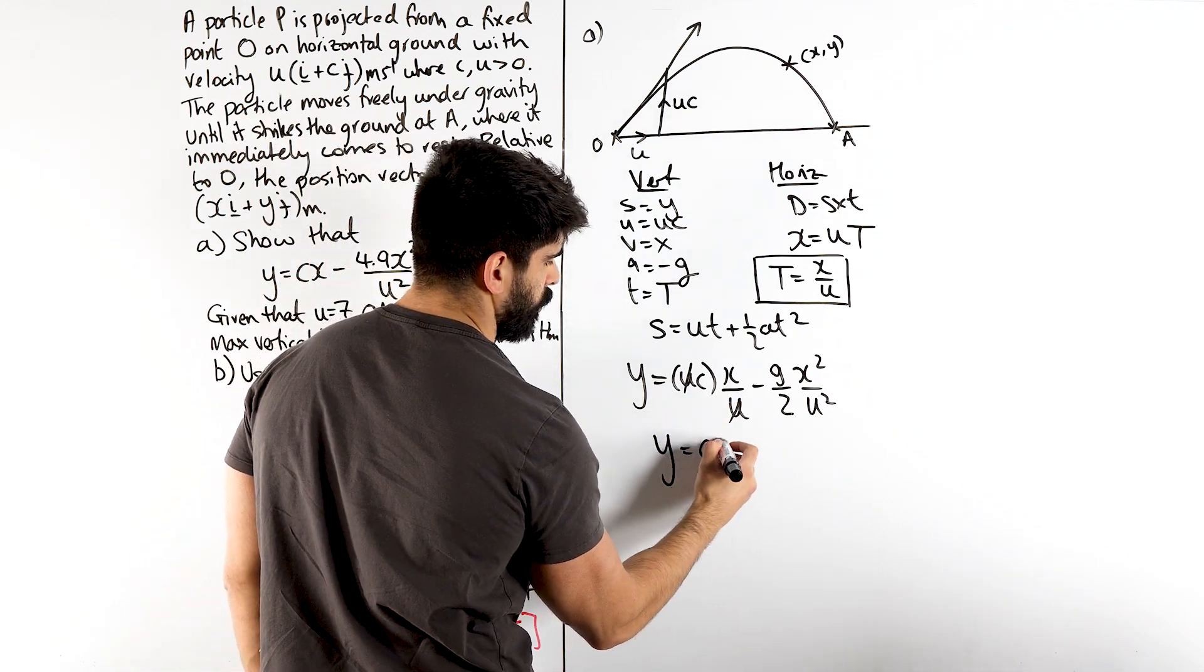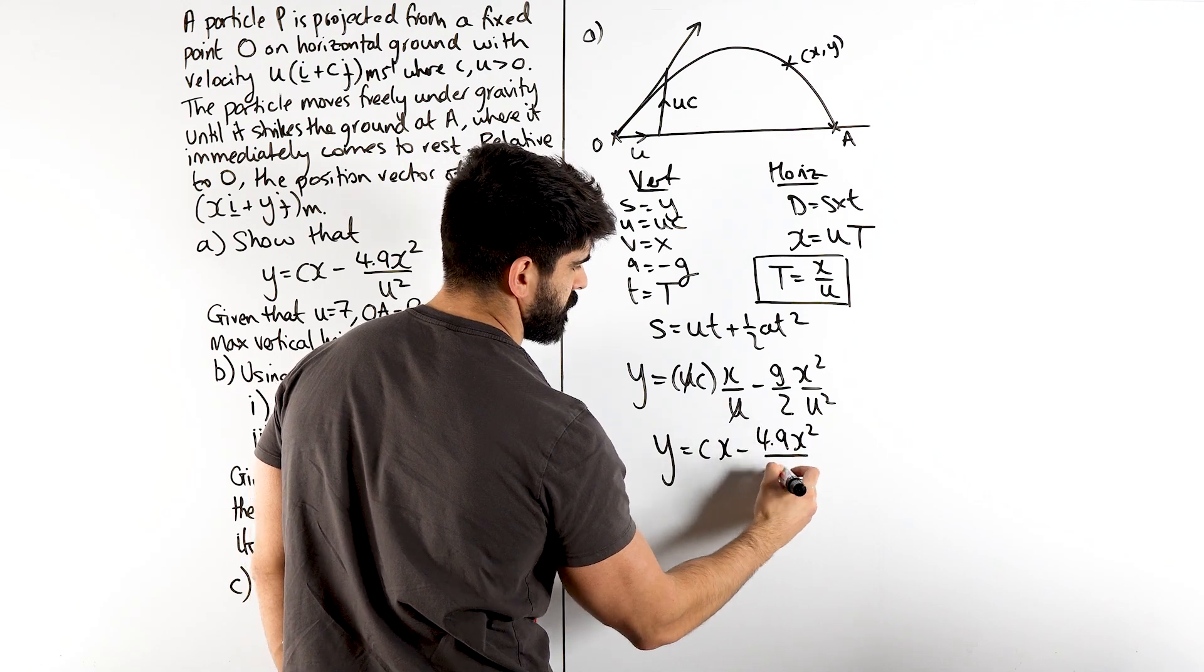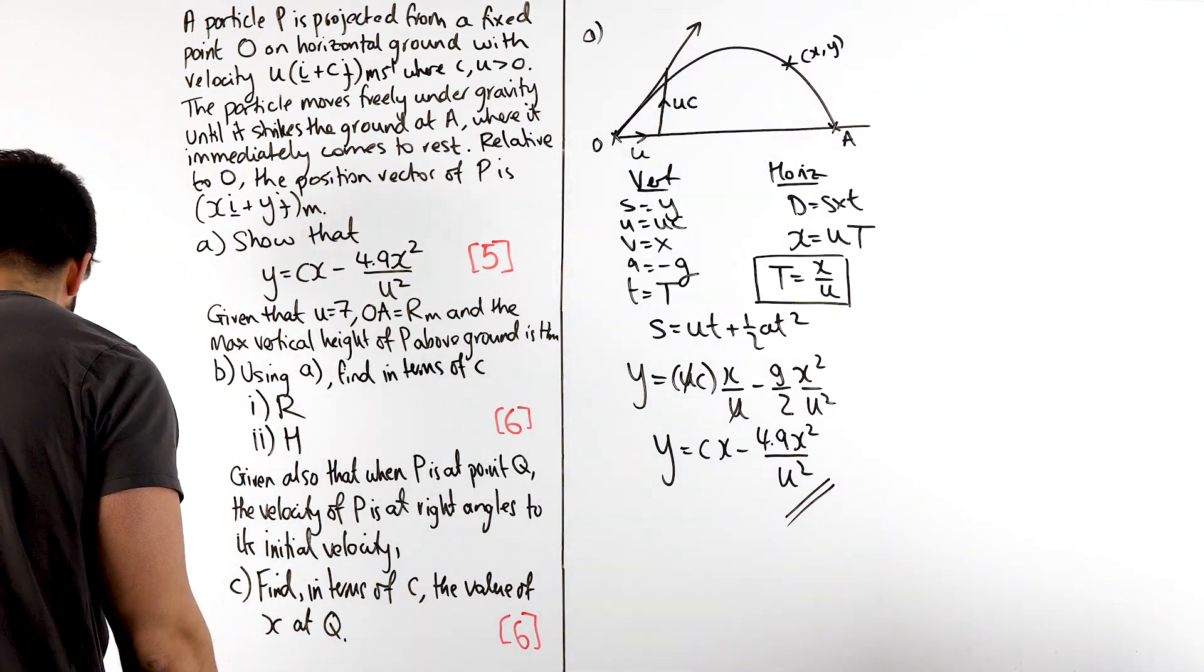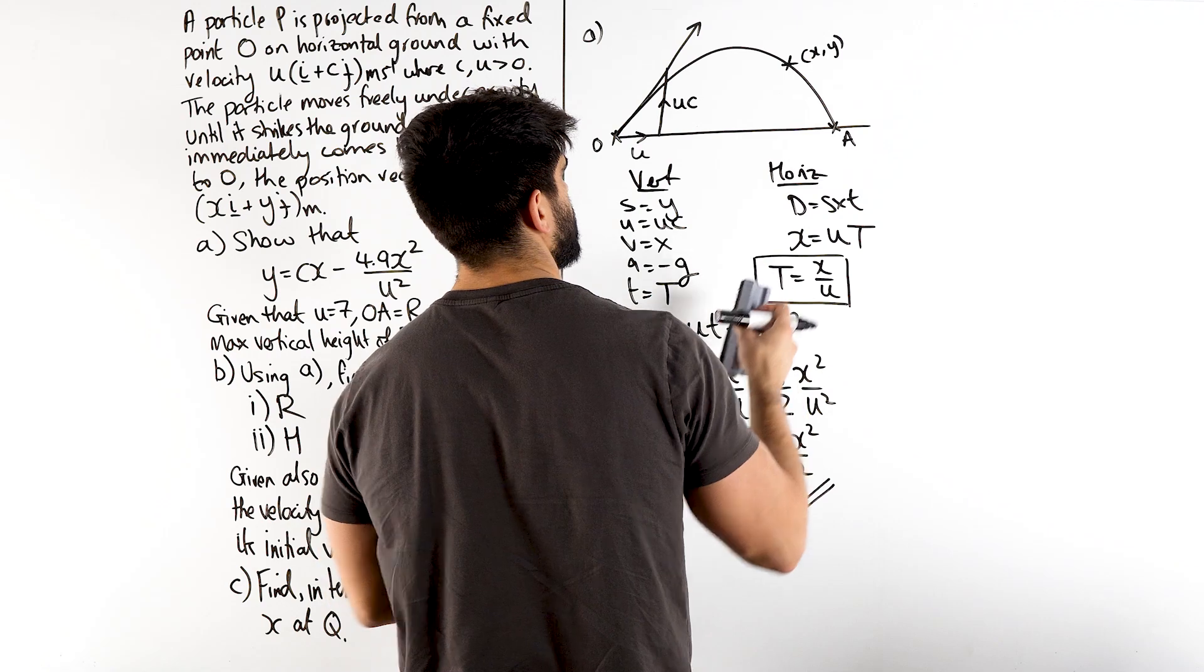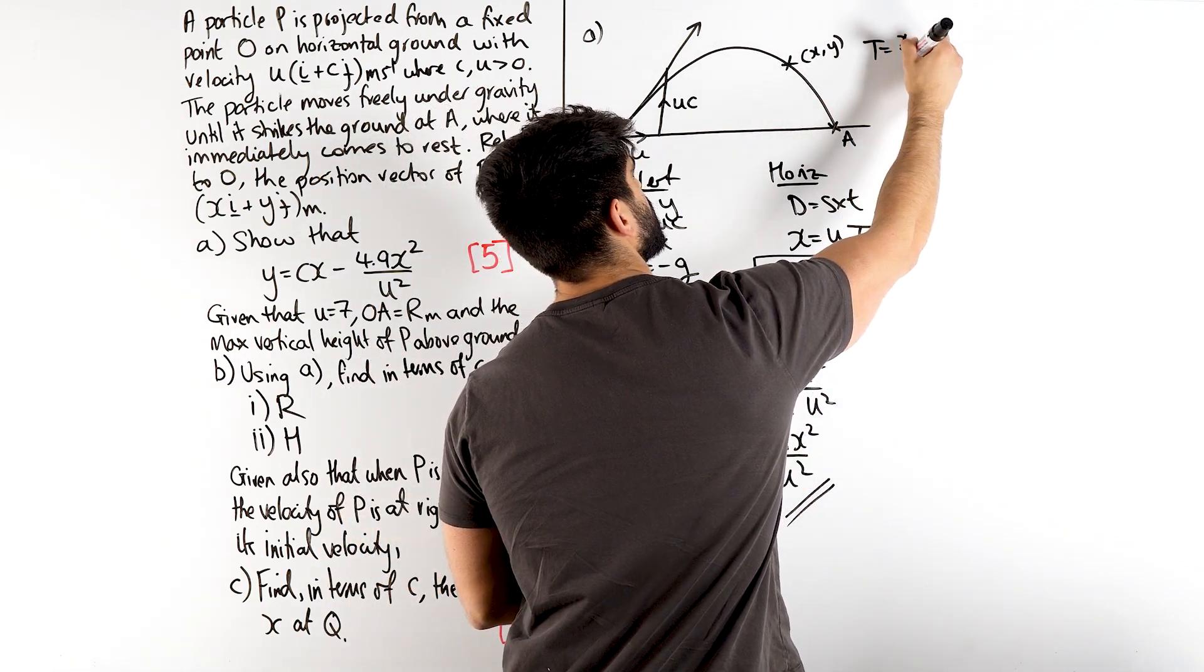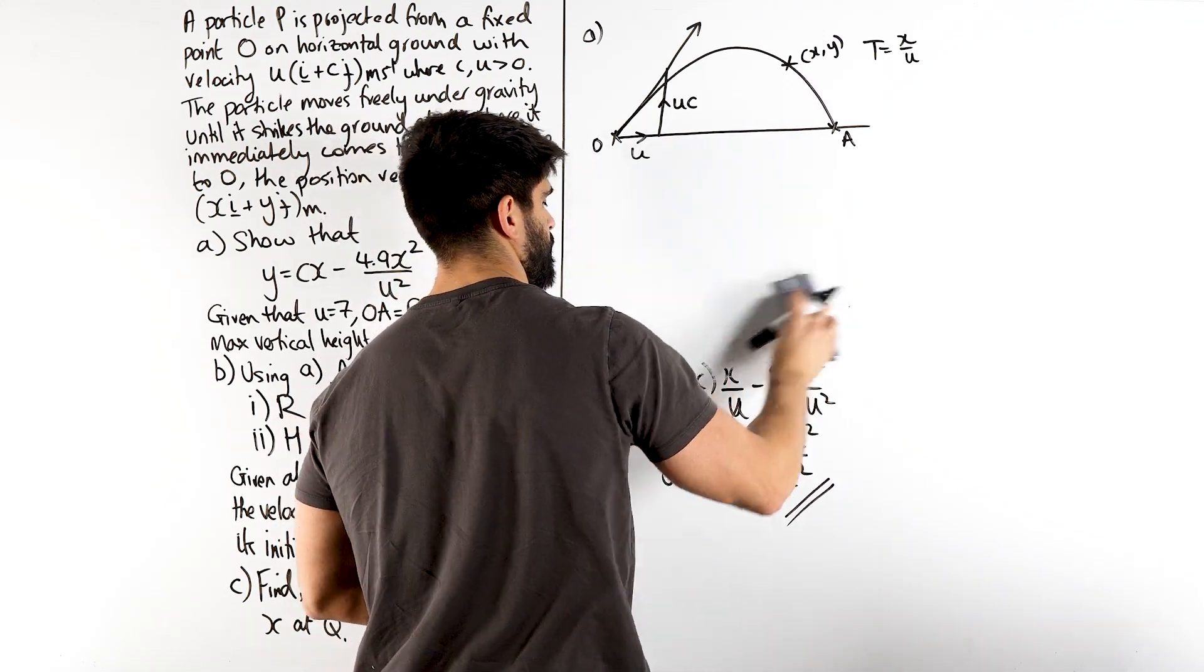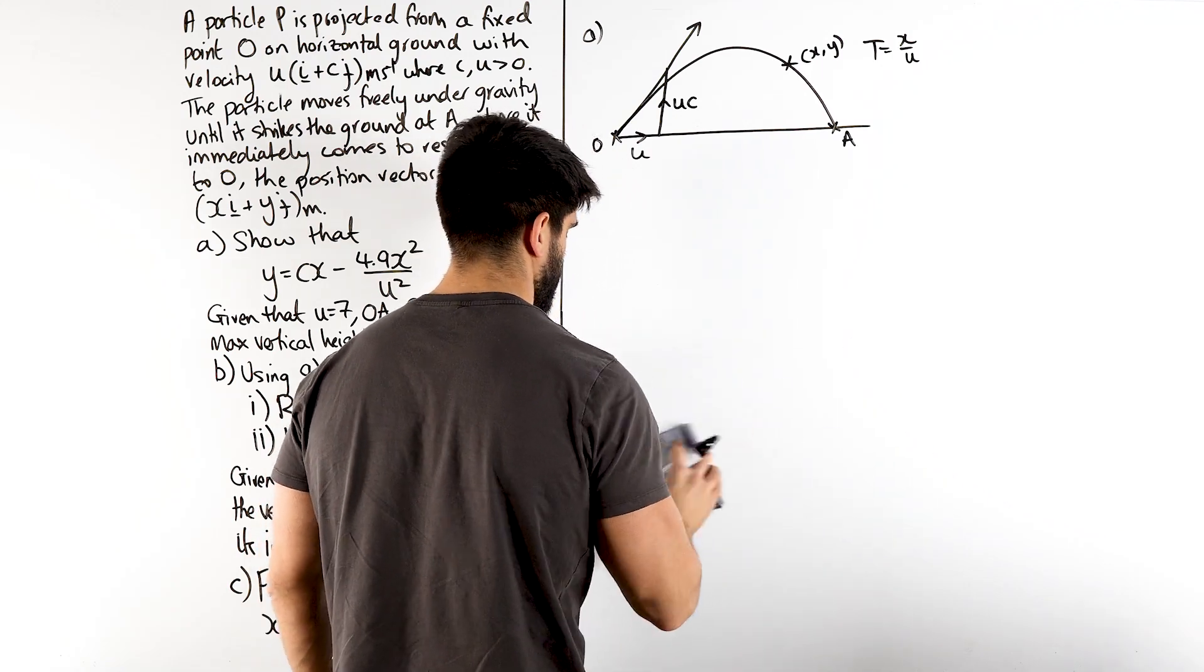See, when you've done it once or twice, it's actually really easy, this stuff. Famous last words, alright? So, that's been shown. It is here, so I'm going to rub it out and rub this all out. This T is X over U. I'm actually going to put it here,